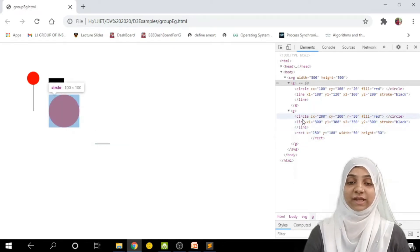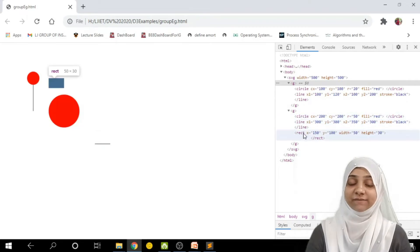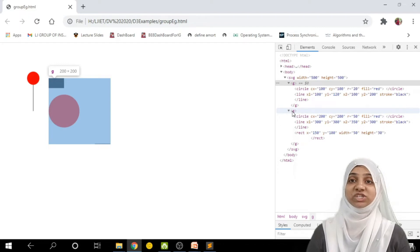By clicking on these elements individually, individual elements are getting selected. But, as soon as I click over the G tag, all these three elements that comes under this G tag are selected simultaneously.